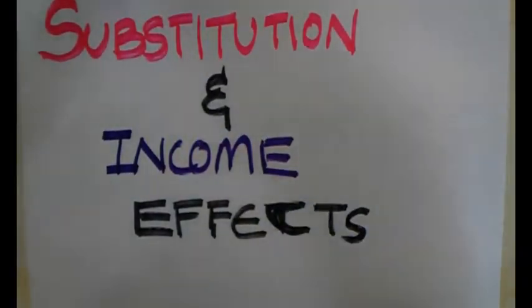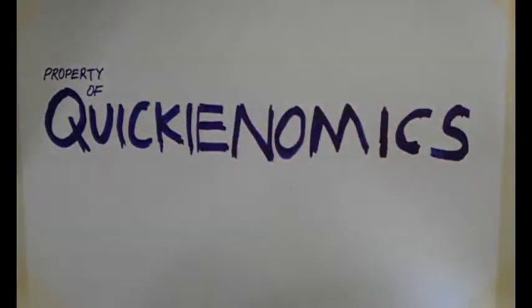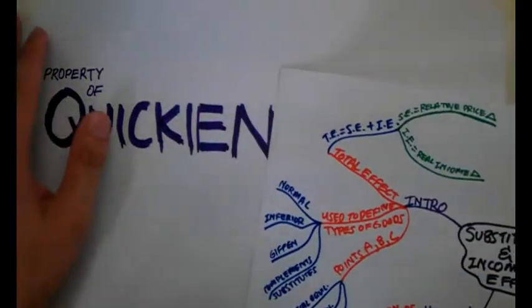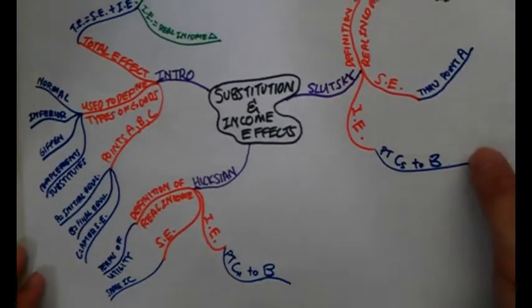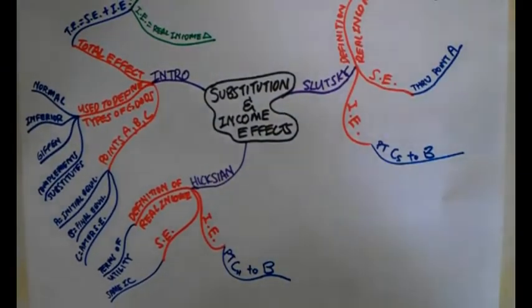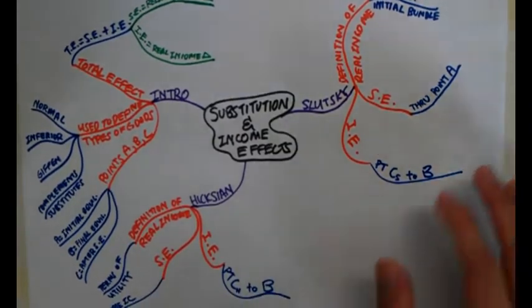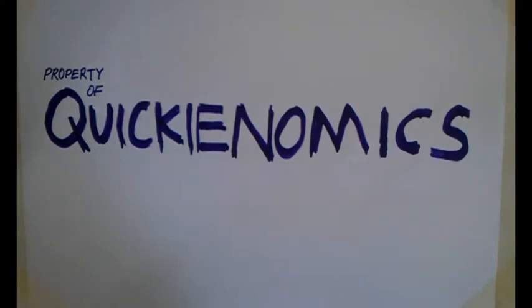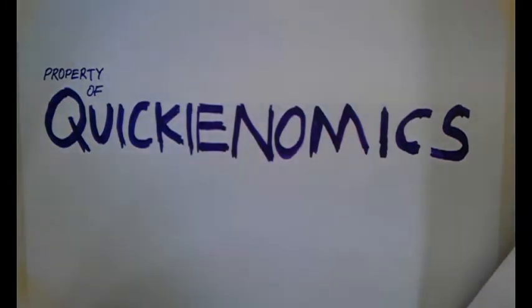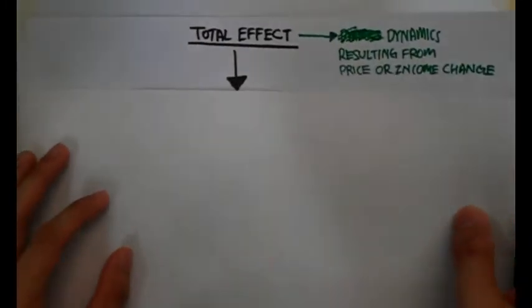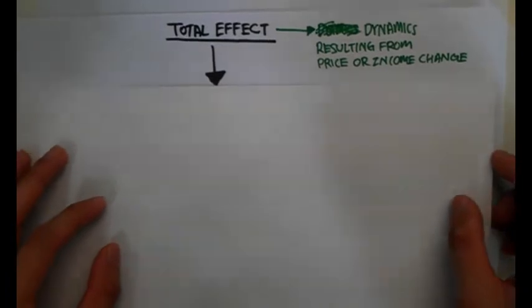The substitution and income effects. Before we start, I would encourage you to pause this video and read the write-up that has been posted on our blog, and also download a copy of the mind map which is available on quickionomics.wordpress.com. So after reading the blog post, you should have a slight understanding of what the substitution and income effect is about.